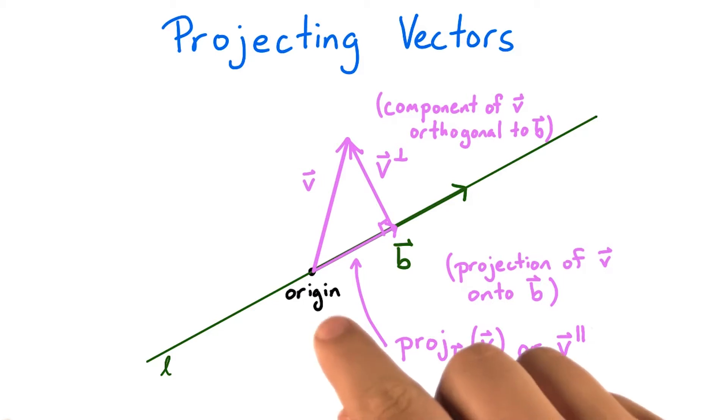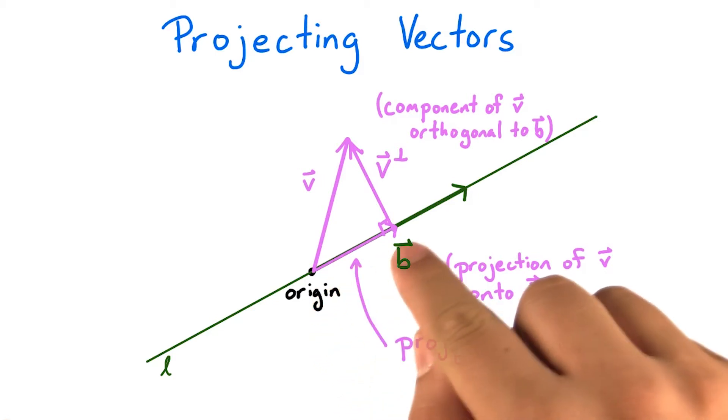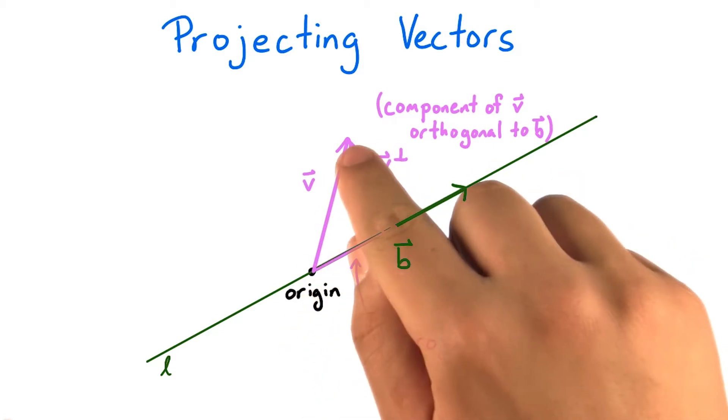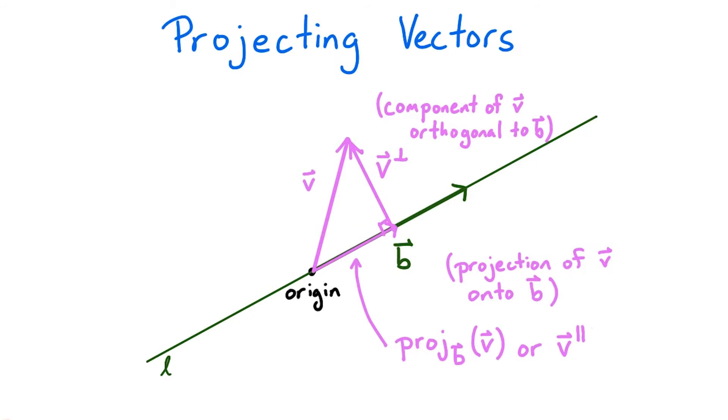Remember our definition of the sum of two vectors? Since we have formed a chain of two arrows, from the tail to the head of v, we can say that the sum of these two vectors is v. In other words, v equals v parallel plus v perp.